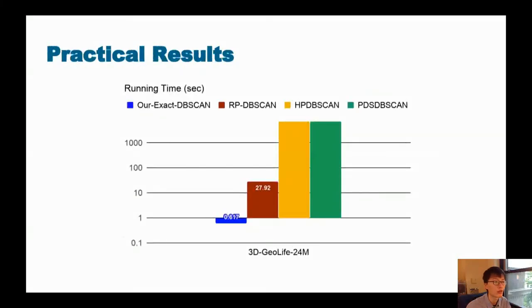Here's a glimpse of our practical results. So this is a bar plot showing the running time of different methods on a 24 million point dataset. As shown here, the y-axis is shown in log scale. Our methods highlighted in blue is orders of magnitude faster than existing implementations.